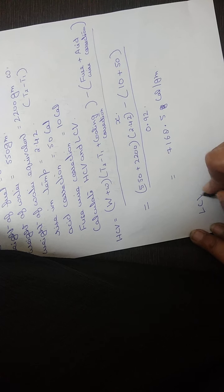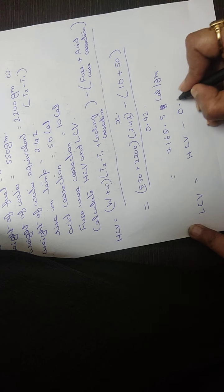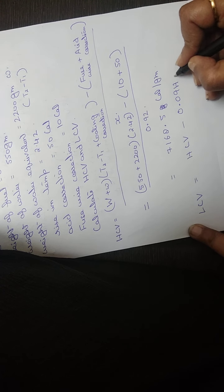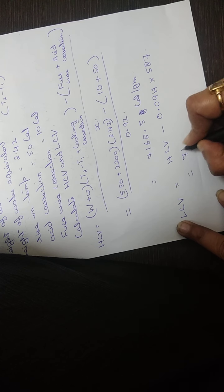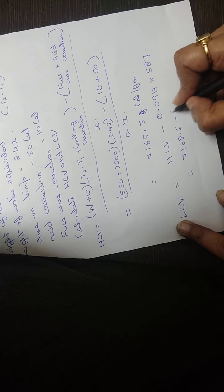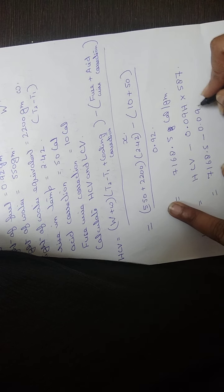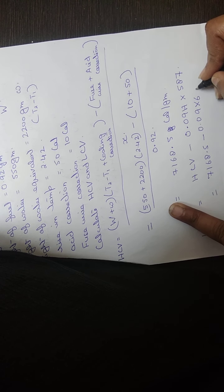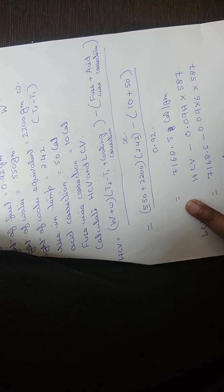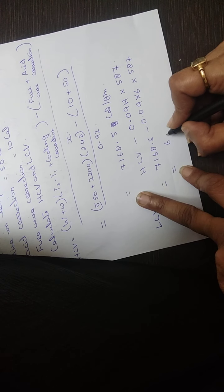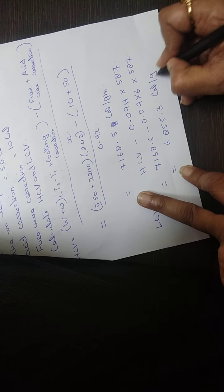The equation for LCV from the bomb calorimeter is: LCV = HCV − 0.09 × H × 587, where H is the percentage of hydrogen and 587 is the latent heat. Substituting: LCV = 7168.5 − 0.09 × 6 × 587. Solving this, we get 6855.3 calories per gram.